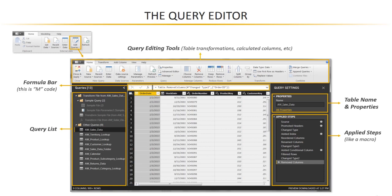Perhaps the most helpful thing is that none of this is set in stone. You can click the X next to any individual step to remove it, click through each applied step to visually see the impact it's having on your table, or click the gear icon on the right to modify or edit individual steps in the process.